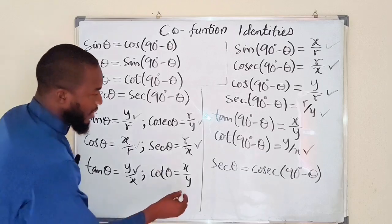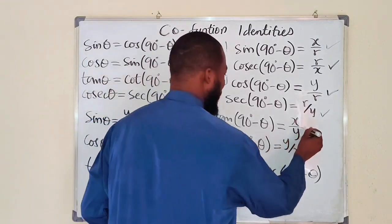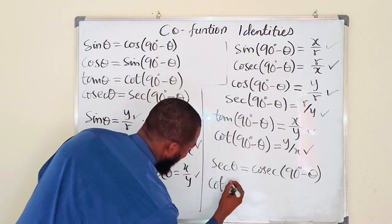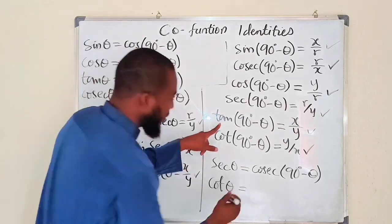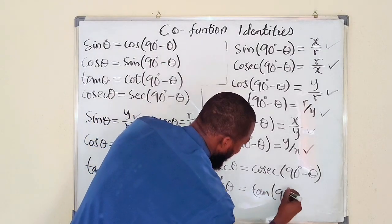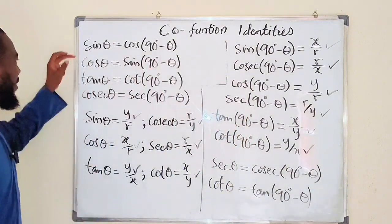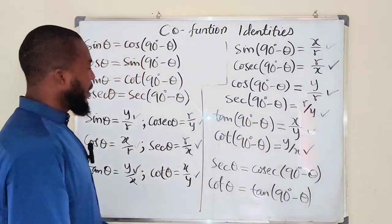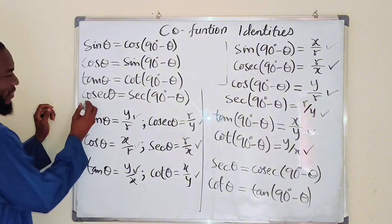Then x over y gives us cotangent of theta equals tangent of (90° - theta). So we have all six co-function identities: one, two, three, four, five, six.